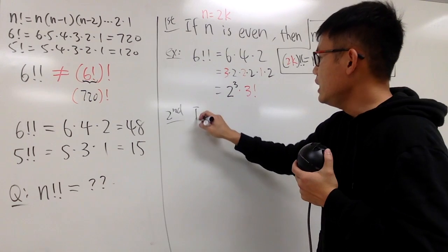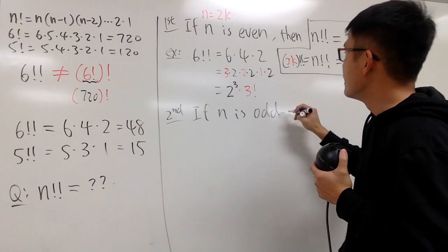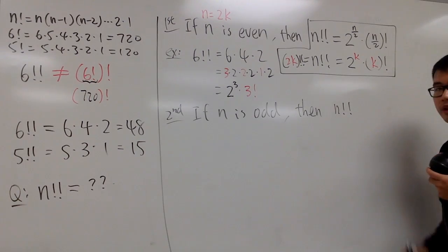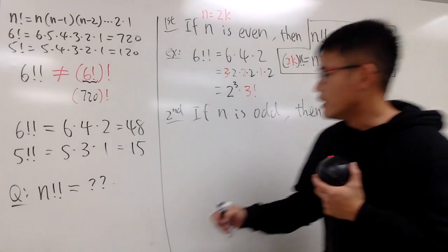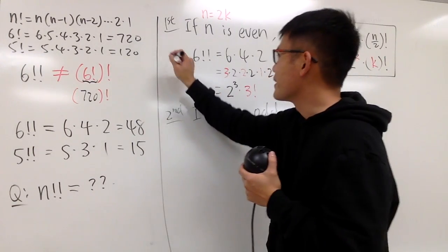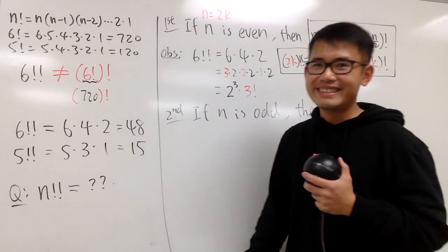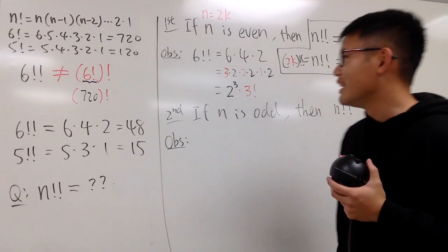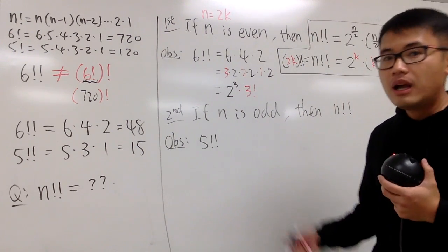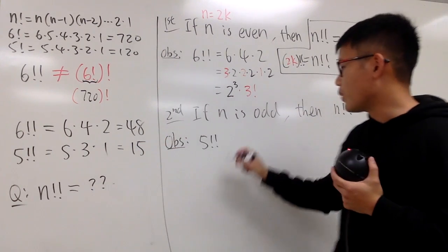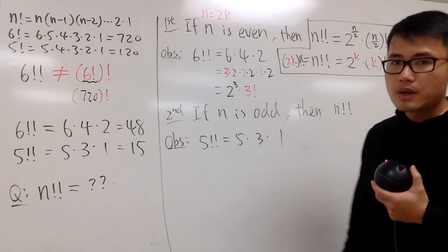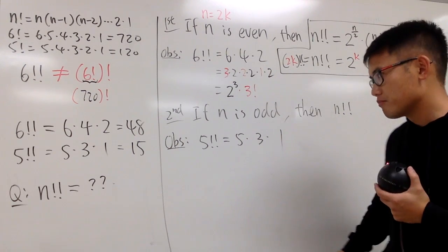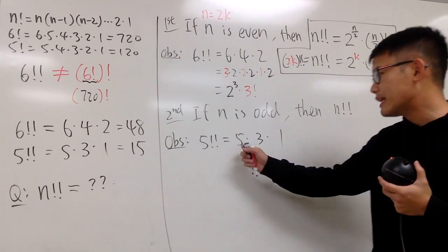Now let's look at the second case: n is odd. I need to come up with a definition for n double factorial when n is odd. Let's make an observation using 5 double factorial, which equals 5 times 3 times 1. In this case, I cannot factor out a 2 from everything, so a different approach is needed. Notice we have 3 factors here.